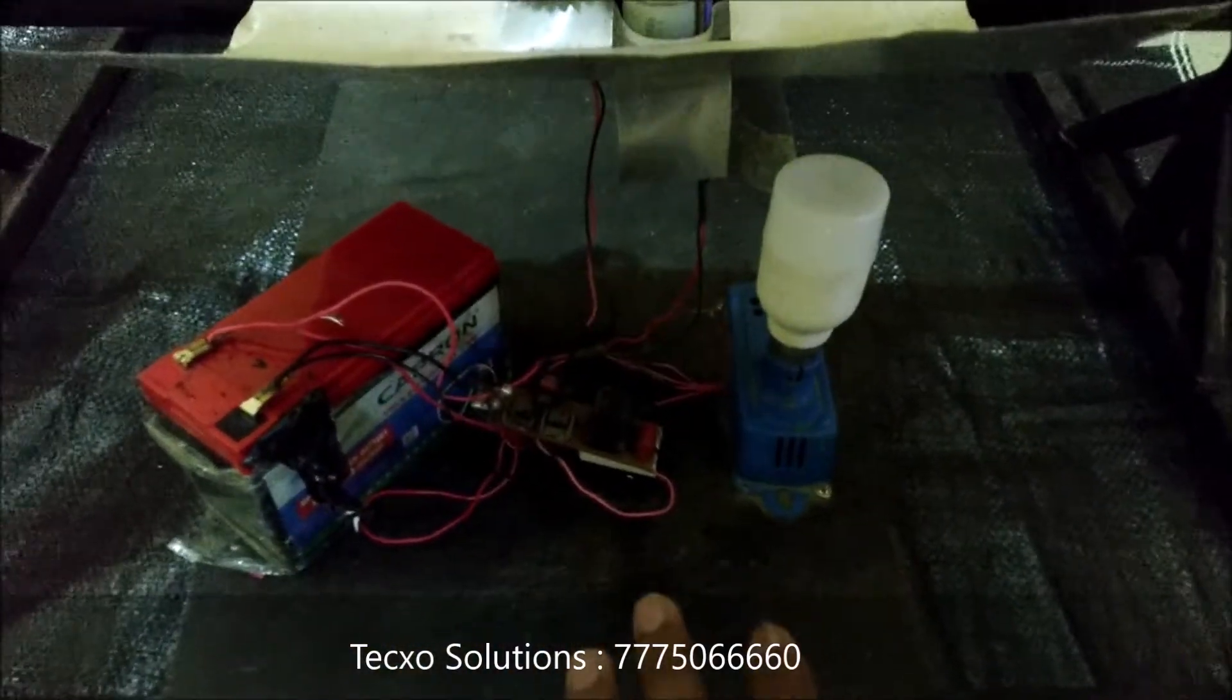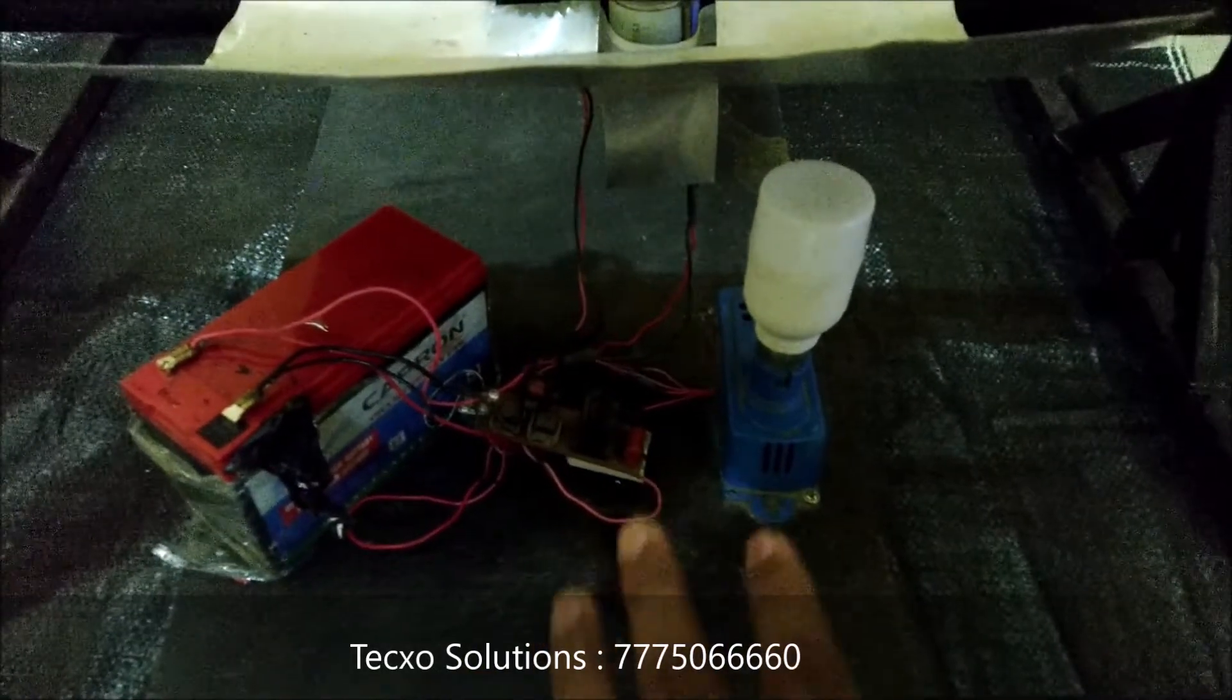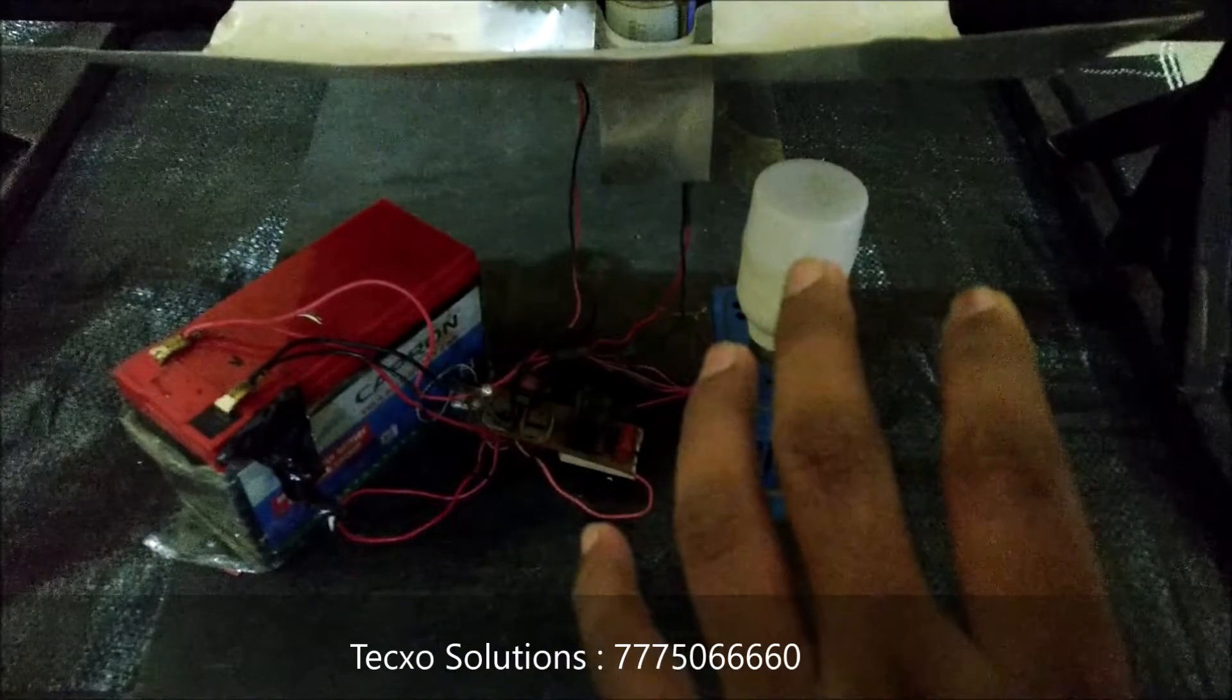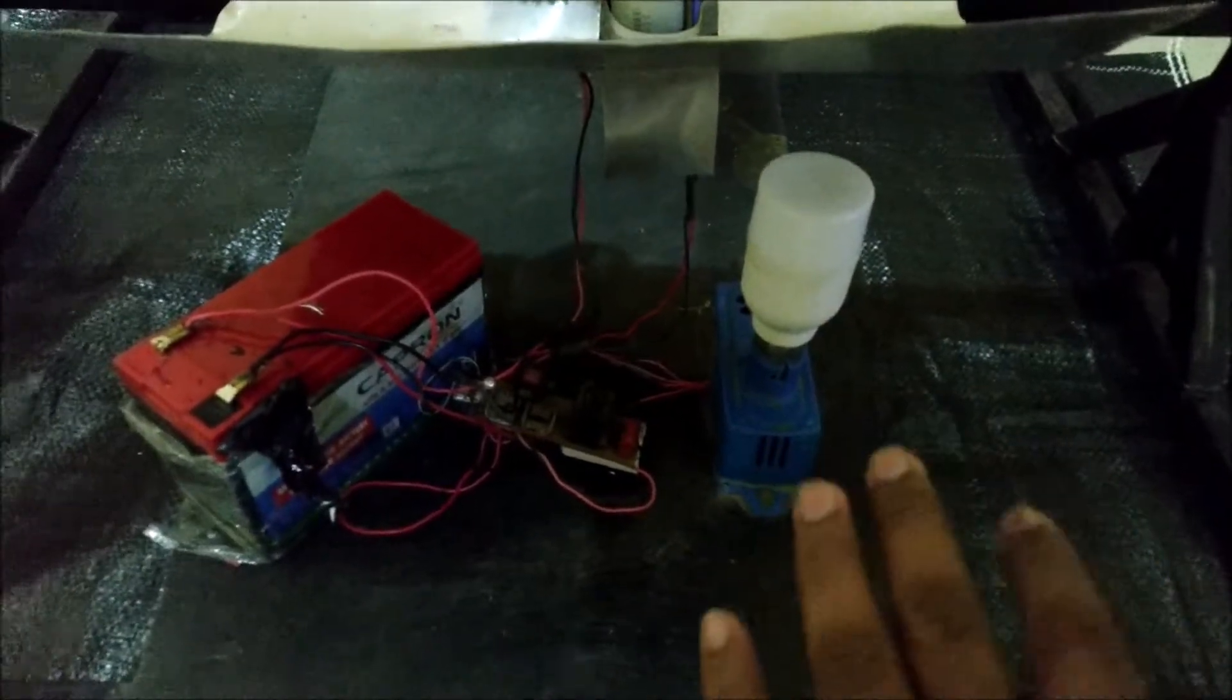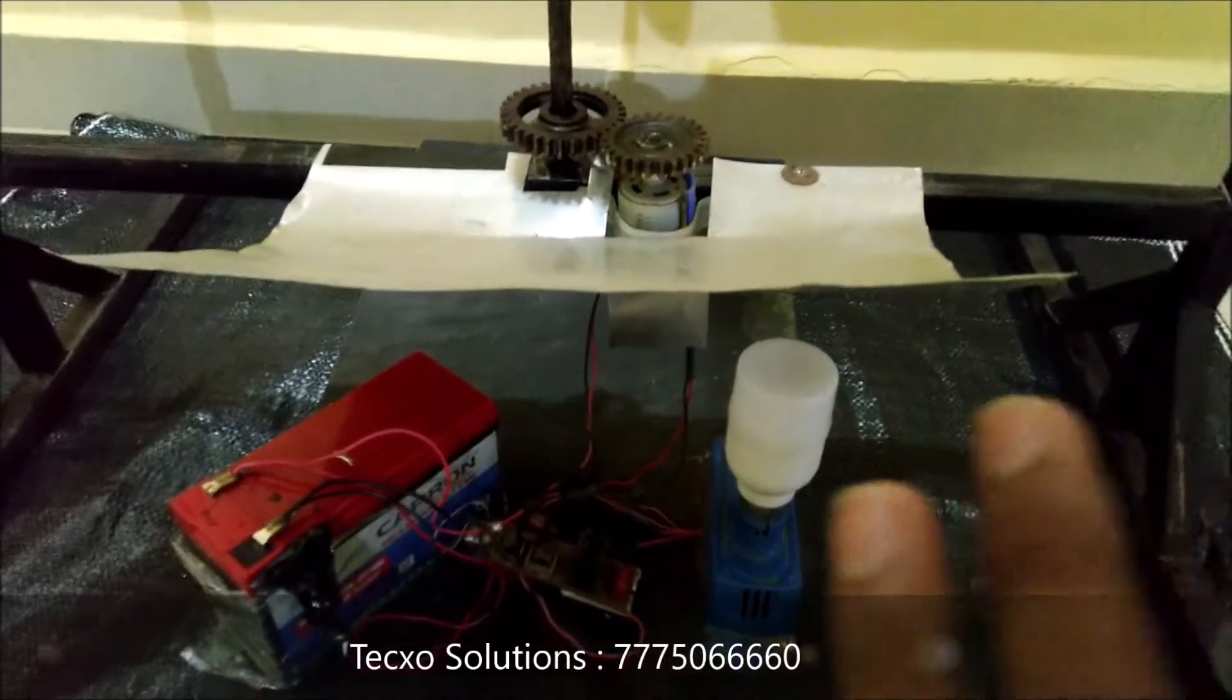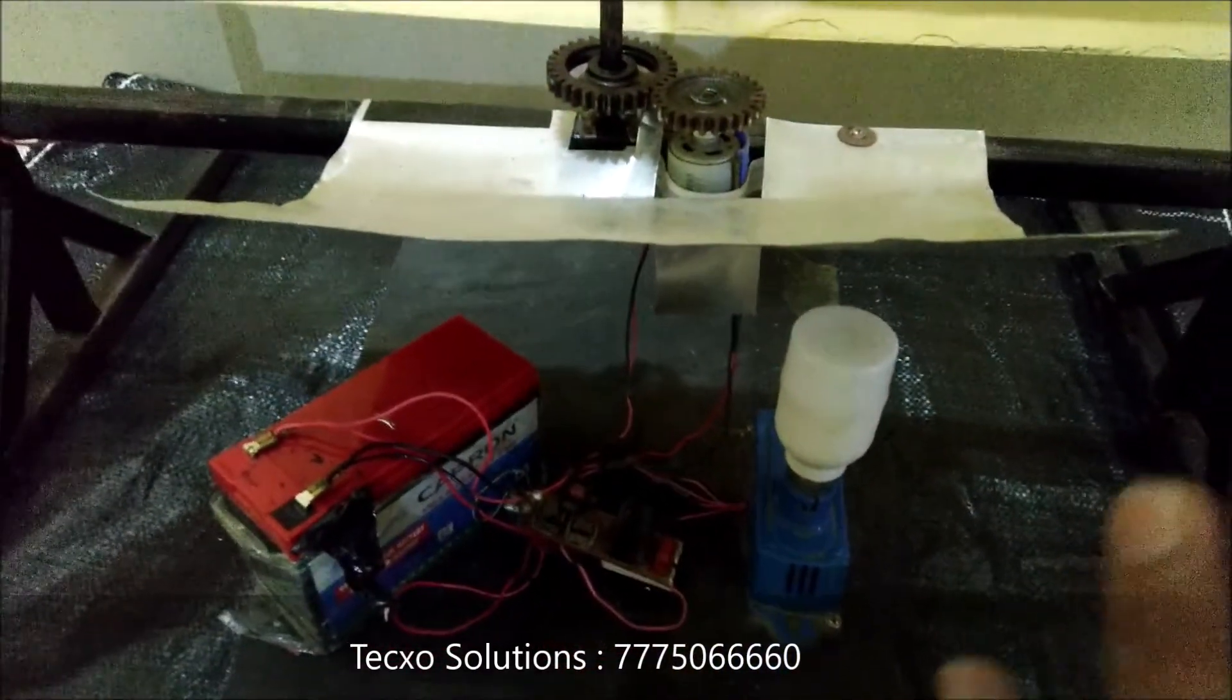After that we use the inverter module. The inverter module converts the DC to AC and at the output we apply the AC load. So in this way total power generation is done. Now let's see how it works.